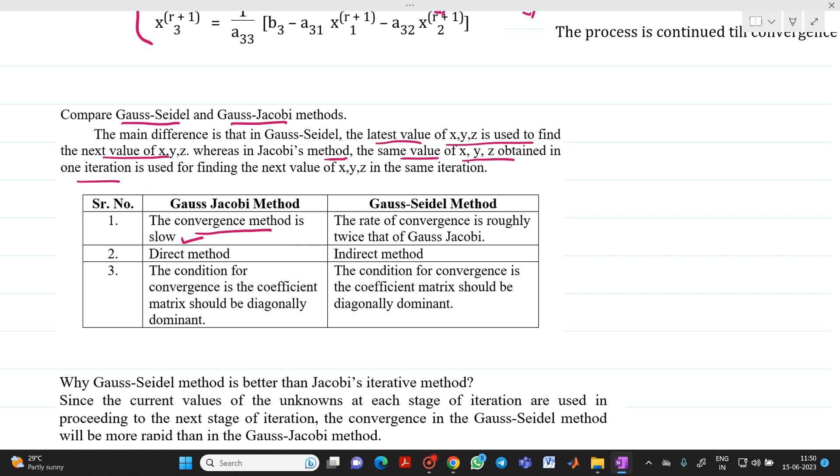Then, if you see this Gauss-Jacobi, now we are talking about Gauss-Jacobi. Please remember, we are not talking about any other method. So if you see, Gauss method, this is a mistake here basically. Gauss-Jacobi is not a direct method, this is also an iterative method or indirect method. Gauss-Seidel method is also, if you see, it will be your iterative or indirect method.